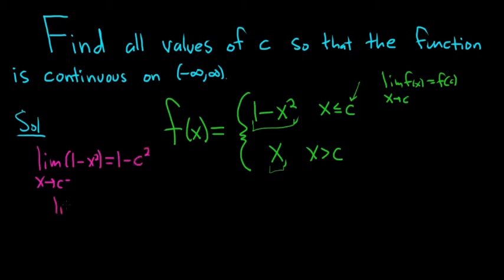Now we'll take the limit from the right. So x approaches c from the right. When we're approaching from the right, x is bigger than c, so we use the second piece. And again, we can just evaluate this by plugging in c, so we get c.